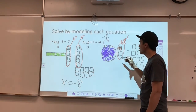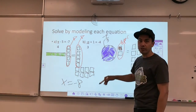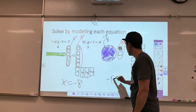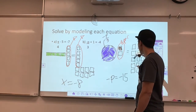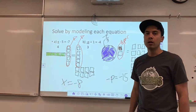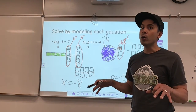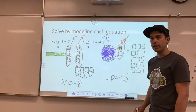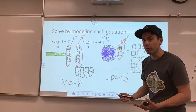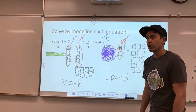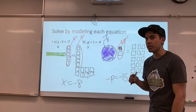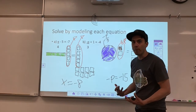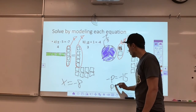Now I know that a negative third, plus a negative third, plus a negative third means I have negative p, which equals negative 15 because I got negative 15 over here. Am I done yet? No, because I always want my variable to be positive. I can do that by multiplying by negative 1 on both sides, which just changes the signs on both sides. So p equals 15.